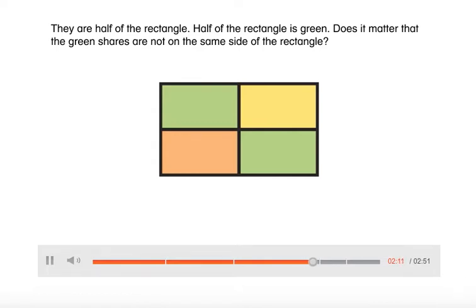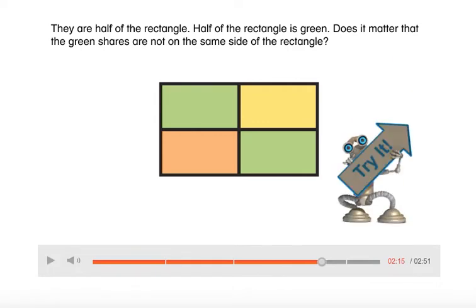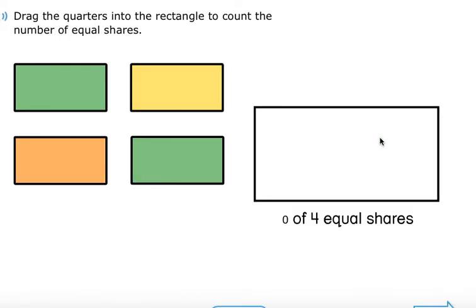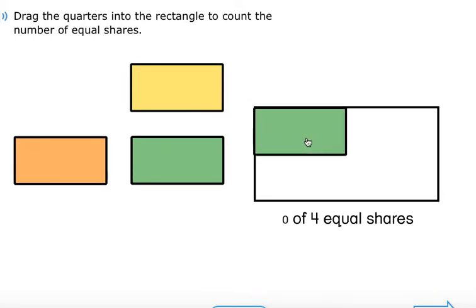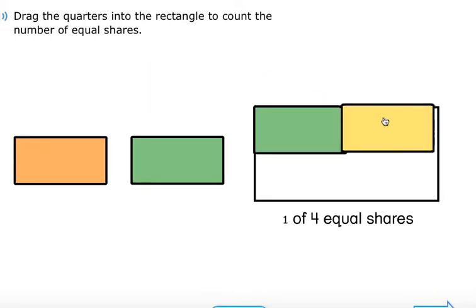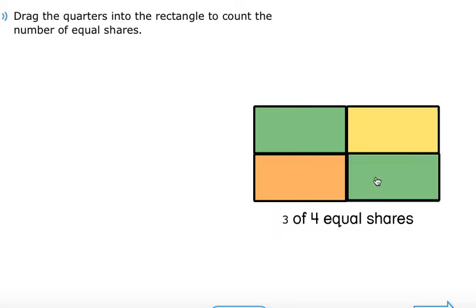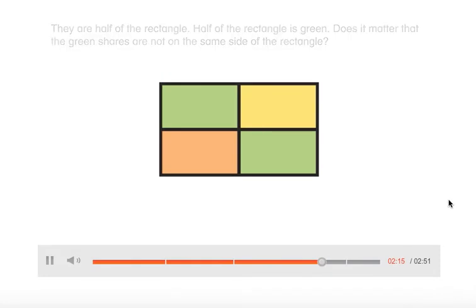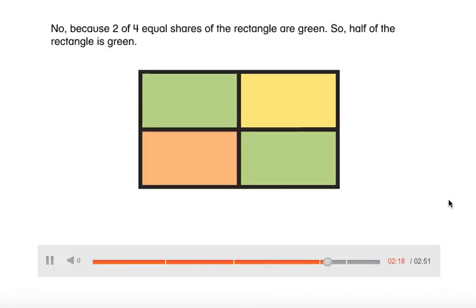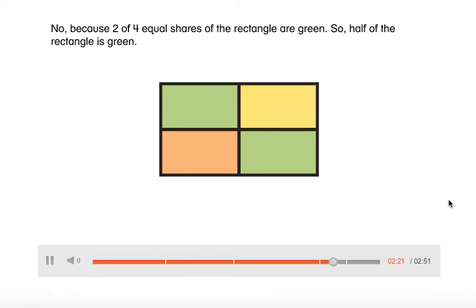Does it matter that the green shares are not on the same side of the rectangle? No, because two of four equal shares of the rectangle are green. So half of the rectangle is green.